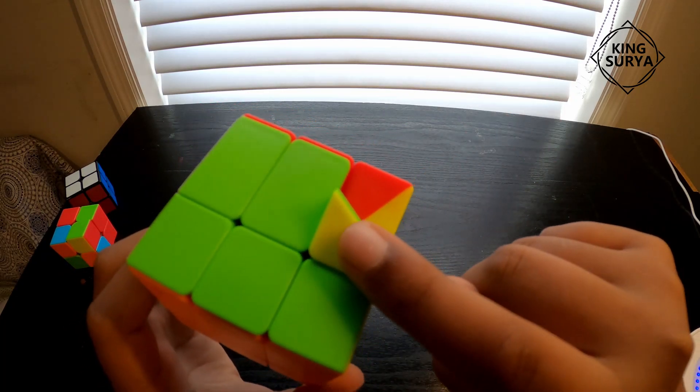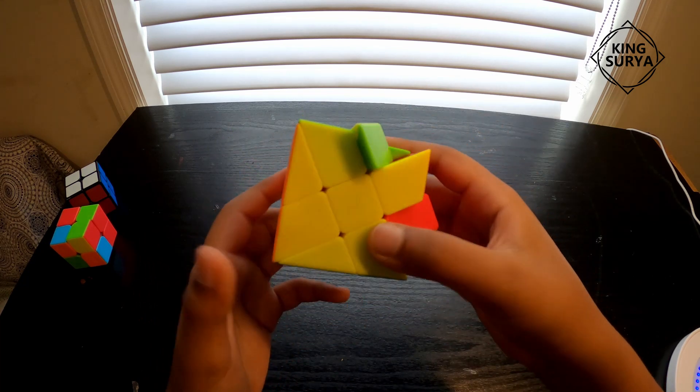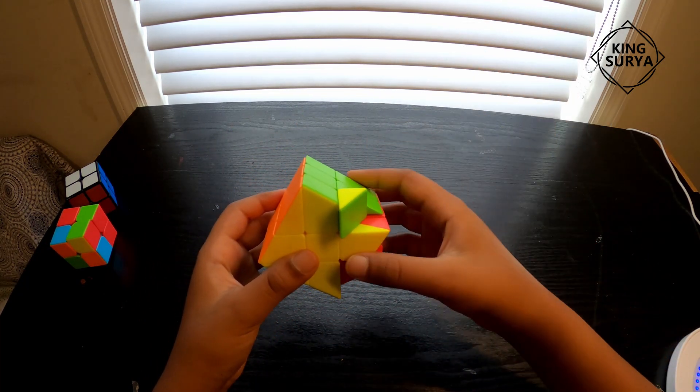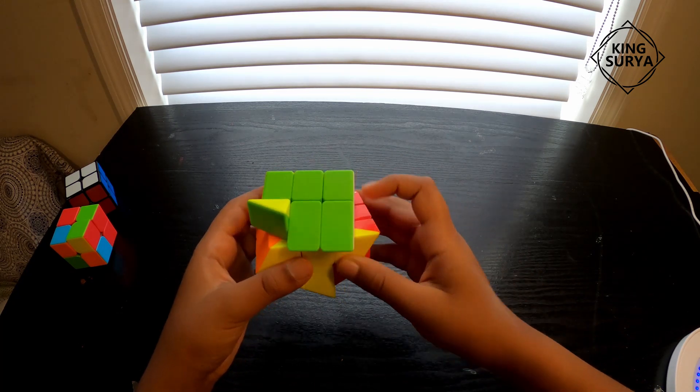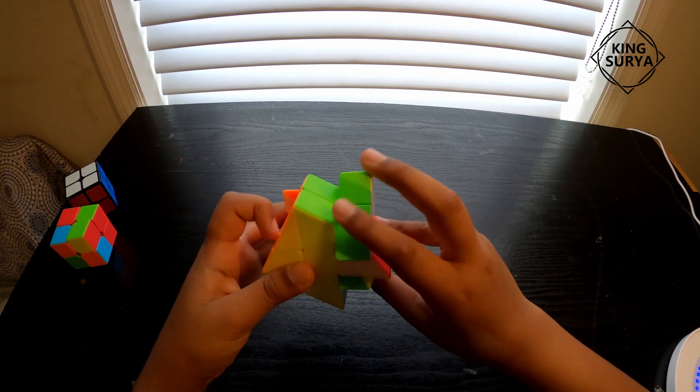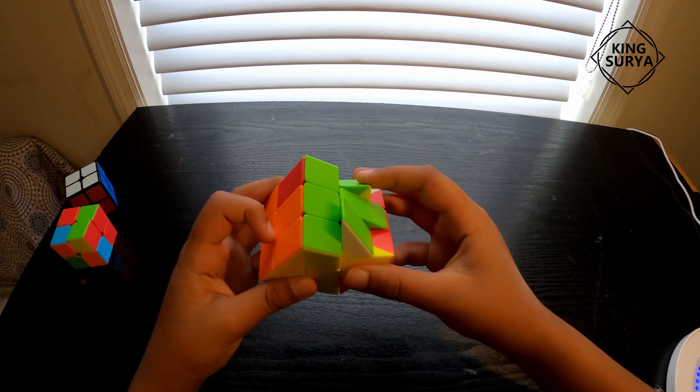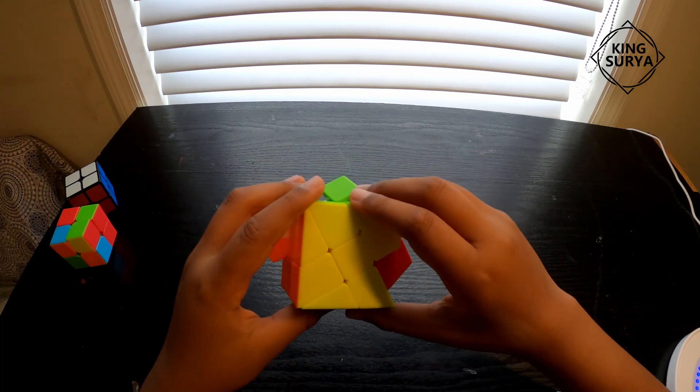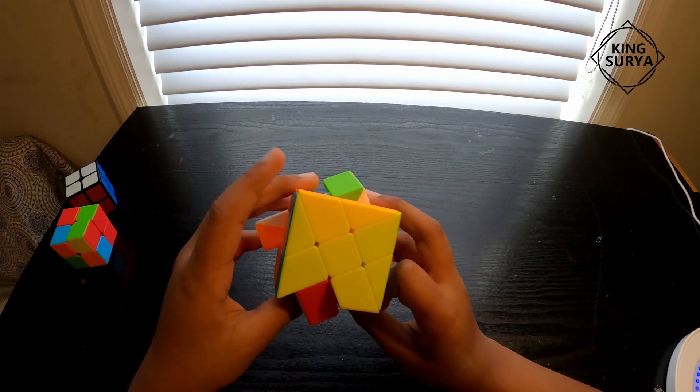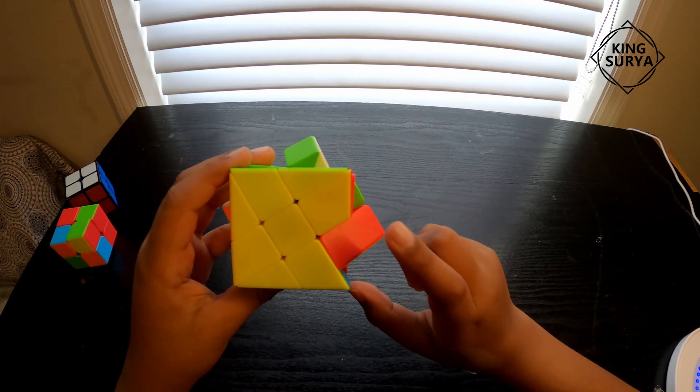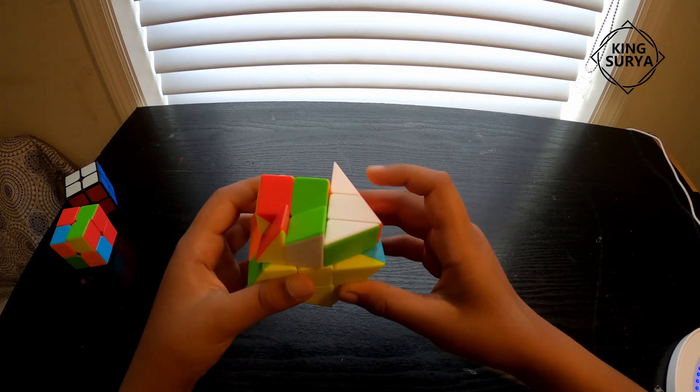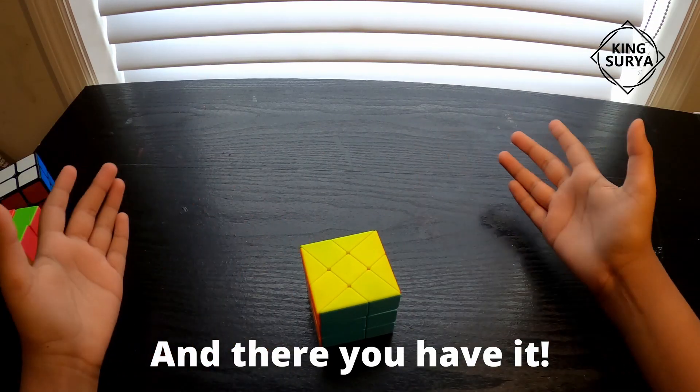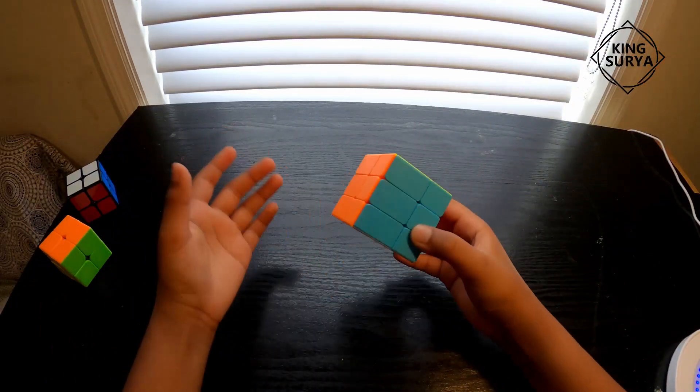Now the last step. We just have to do this one and this one. We're going to be holding this yellow on top and doing this algorithm. Now that the white is over here, you're going to move it to the next one that's unsolved. If this one was unsolved you move it over here. However in this case, this one's unsolved so you move it over here and finish off the algorithm. And there you have it, your cube is solved.